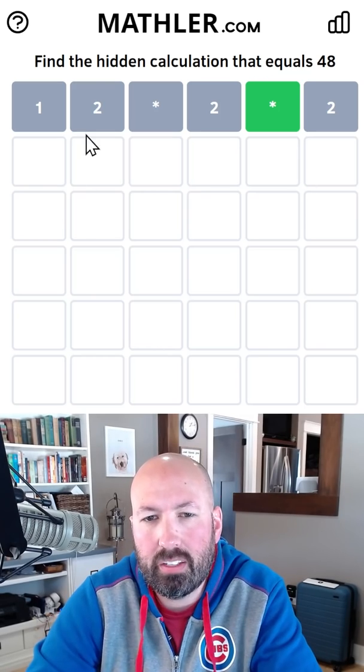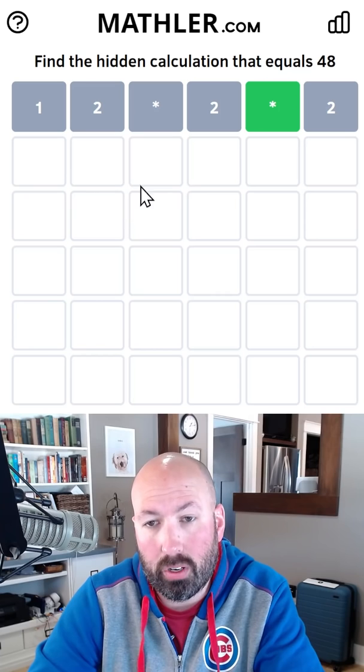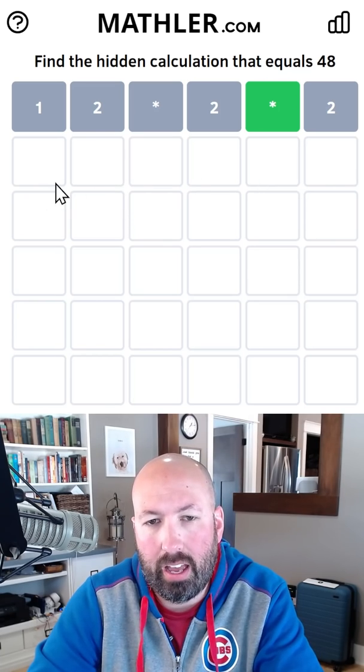Perfect. So we need something that equals like 12 or 6 or 8, and then we can multiply by 4, 6, or 8. So maybe we should try and add, possibly.